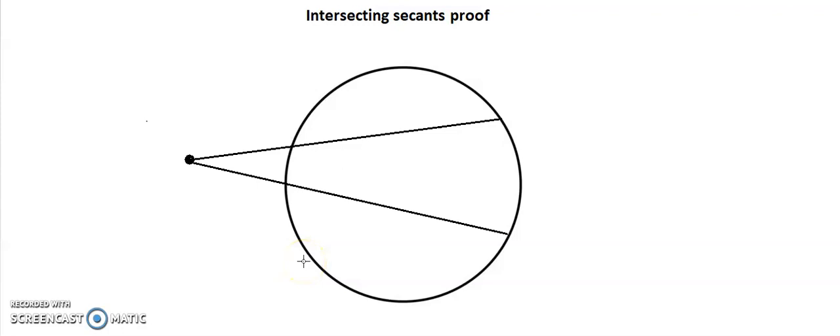When we're thinking about intersecting secants, we are looking at two lines that cross and they intersect on the outside. When we are thinking about this, the first thing we need to do is label.